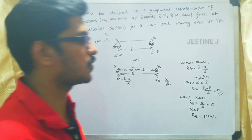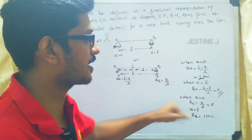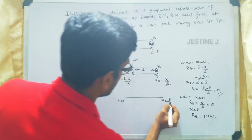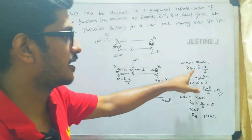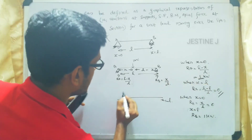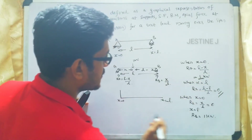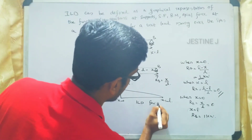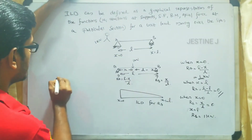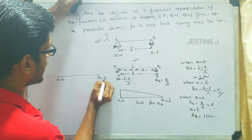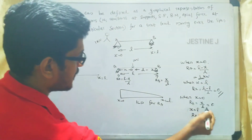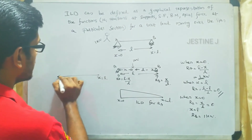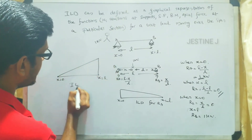Now we draw the diagrammatic representation for Ra and Rb. For reaction Ra: at x equal to 0 the value is 1, and at x equal to l the value is 0 — this gives a linearly decreasing diagram. This is the ILD for reaction Ra. Similarly, for Rb: at x equal to 0 the value is 0, and at x equal to l the value is 1 — giving a linearly increasing diagram. This is the ILD for Rb.